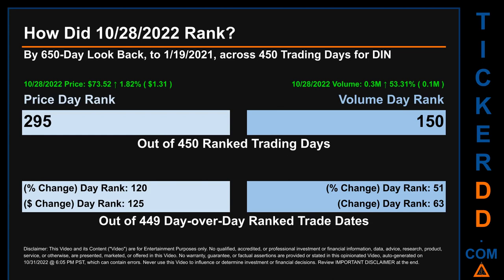Hello, my name is Magnus. How did October 28, 2022 rank for DIN by the 650 calendar day lookback to January 19, 2021? Across 450 trading days, October 28, 2022 price ranked 295th while its volume ranked 150th. Each of the 450 trading days were ranked amongst themselves by highest end-of-day price and volume, with a rank of 1 being the highest and 450 being the lowest. The price's day-over-day percentage change of 1.82% had a day rank of 120, while its dollar difference of $1.31 had a rank of 125 compared across 449 trading days. Volume's percentage change and difference were ranked respectively at 51 and 63.